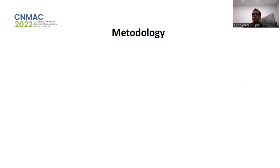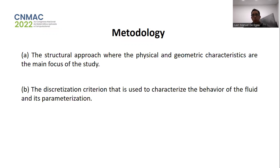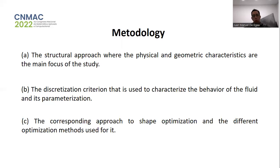The methodology consists in classifying the works into three groups according to the approach that each of them makes about the problem. The first group corresponds to the structural approach, where the physical and geometric characteristics are the main focus. The second group is based on the discretization criterion used to characterize the behavior of the fluid and its parametrization. The third group corresponds to shape optimization and the different optimization methods used for it.